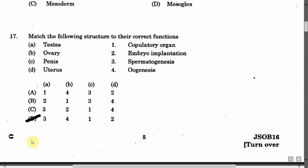The next question is: Match the following structures to their correct functions. Left side: A. Testes, B. Ovary, C. Penis, D. Uterus. Right side: 1. Copulatory organ, 2. Embryo implantation, 3. Spermatogenesis, 4. Oogenesis. The correct answer is Option D.